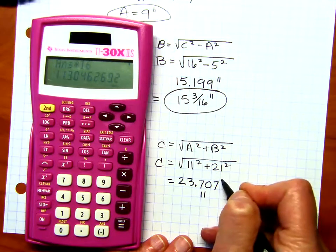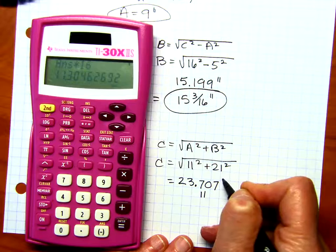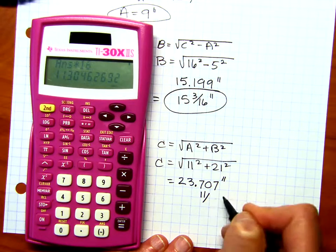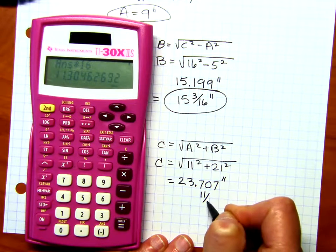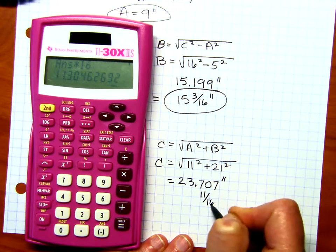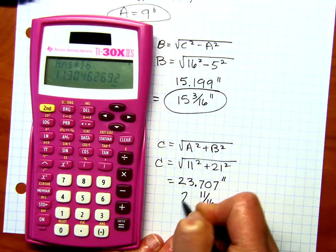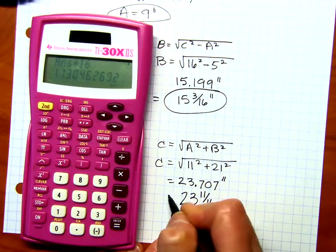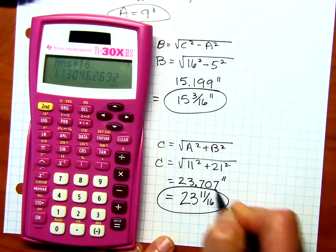So that was 3 quarters of an inch. So 11 sixteenths, that is, in fact, less than 3 quarters of an inch. It's 1 sixteenth less. But anyway, 23 and 11 sixteenths. And that would be my final answer.